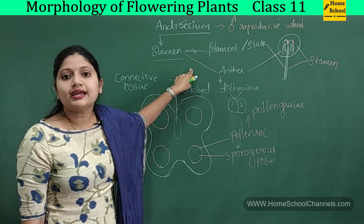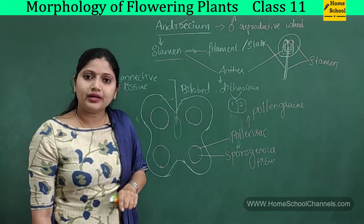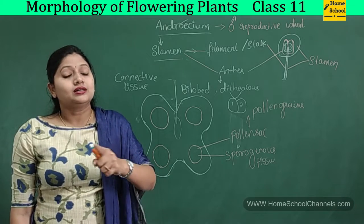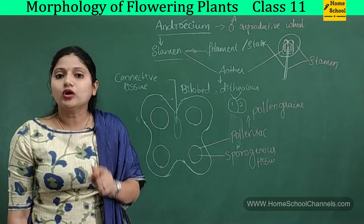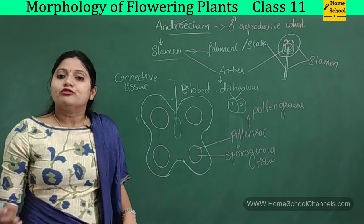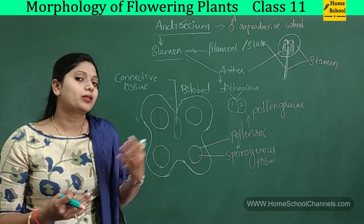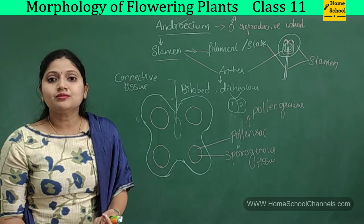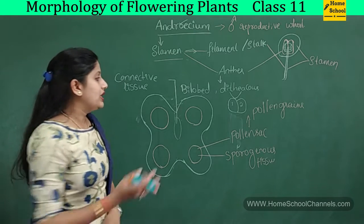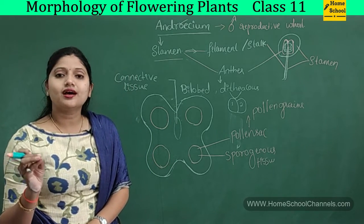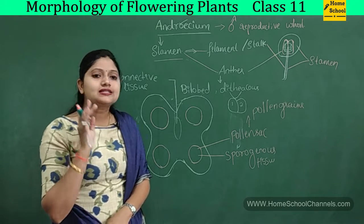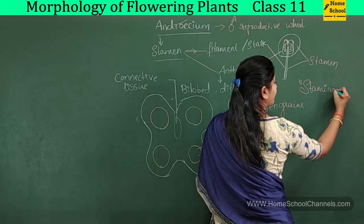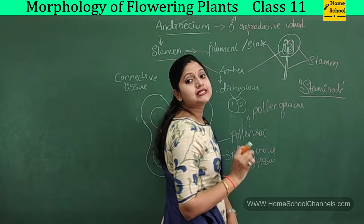This is a fertile stamen because it can produce the male gamete — the pollen grain. Like fertile stamens, there are also sterile stamens which are not able to produce pollen grains. Just as in any organism some individuals are fertile and some are sterile, similarly some stamens are sterile in nature. Such sterile stamens are called staminodes.